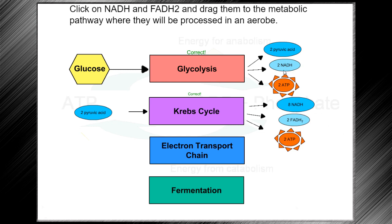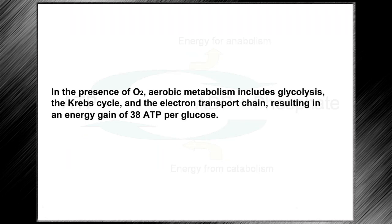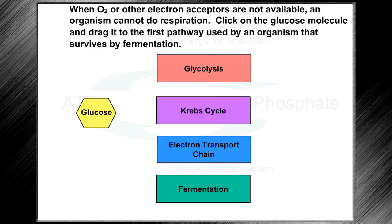Let's drag the NADH and FADH2 to the metabolic pathway where they will be processed in an aerobe. In the presence of oxygen, aerobic metabolism includes glycolysis, the Krebs cycle, and the electron transport chain, resulting in an energy gain of 38 ATP per glucose.